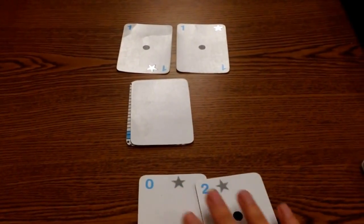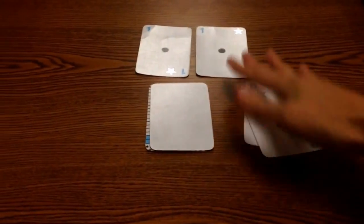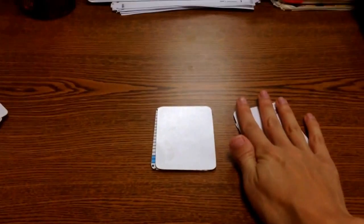Oh! 0 plus 2 is 2. 1 plus 1 is also 2. So, we have a tie again.